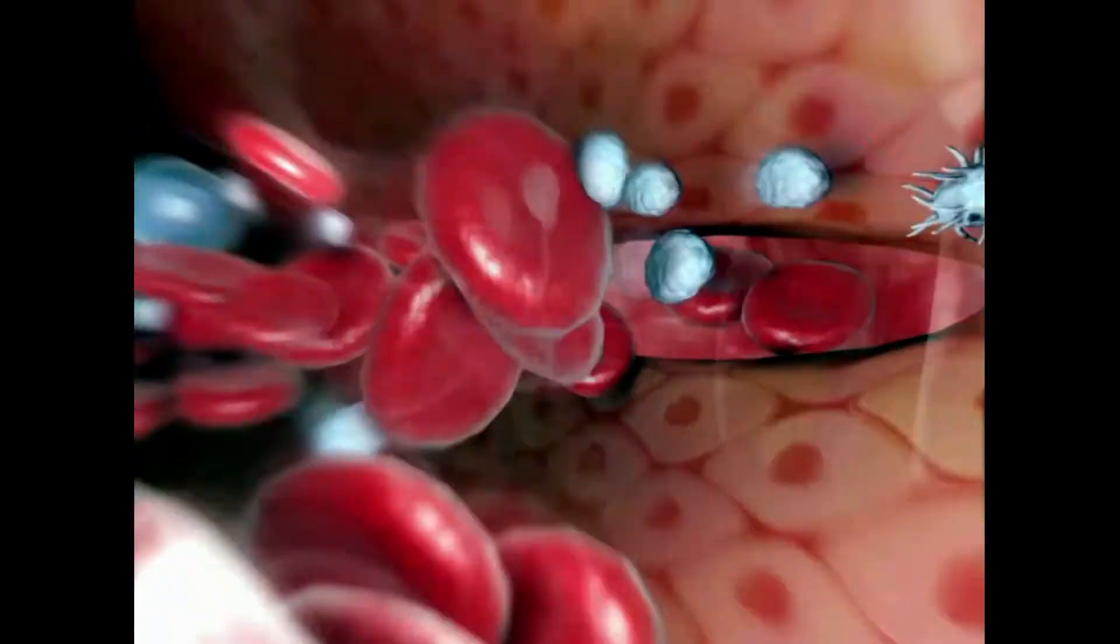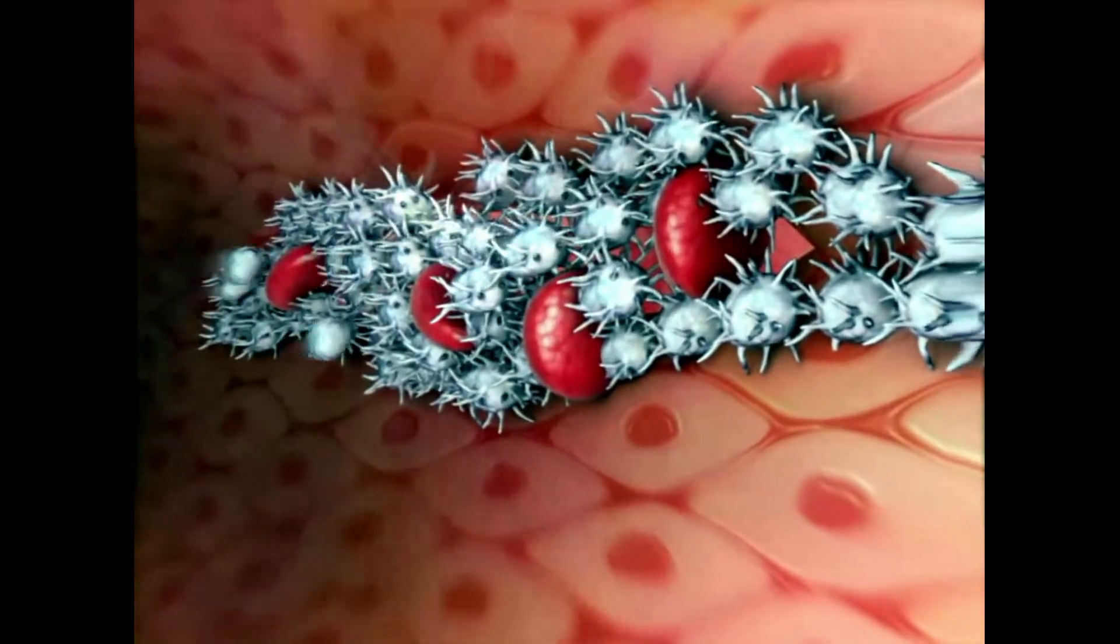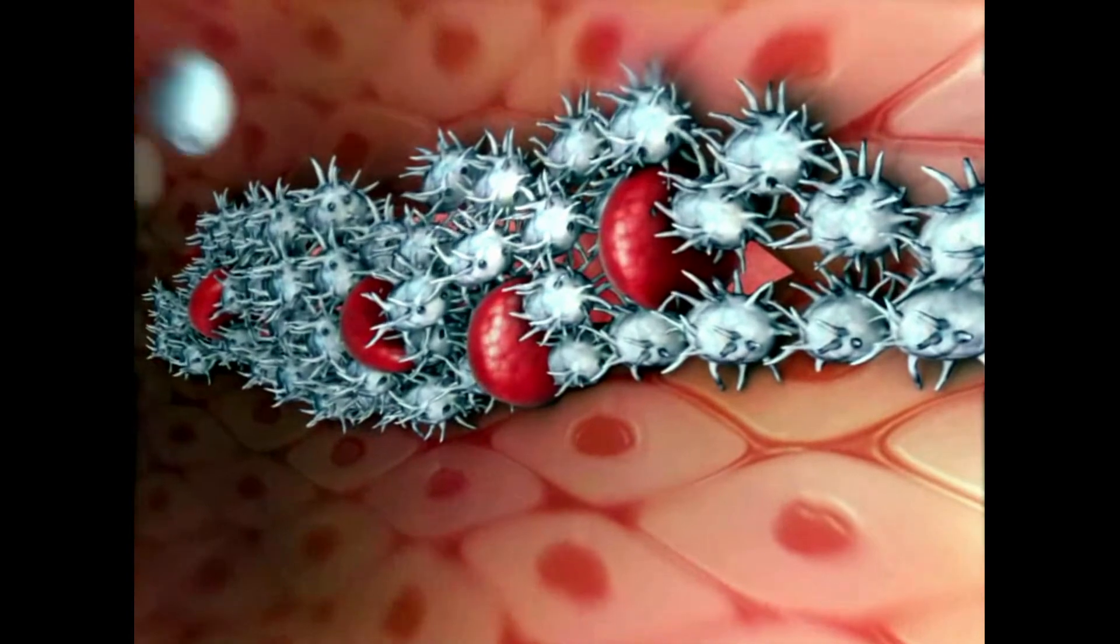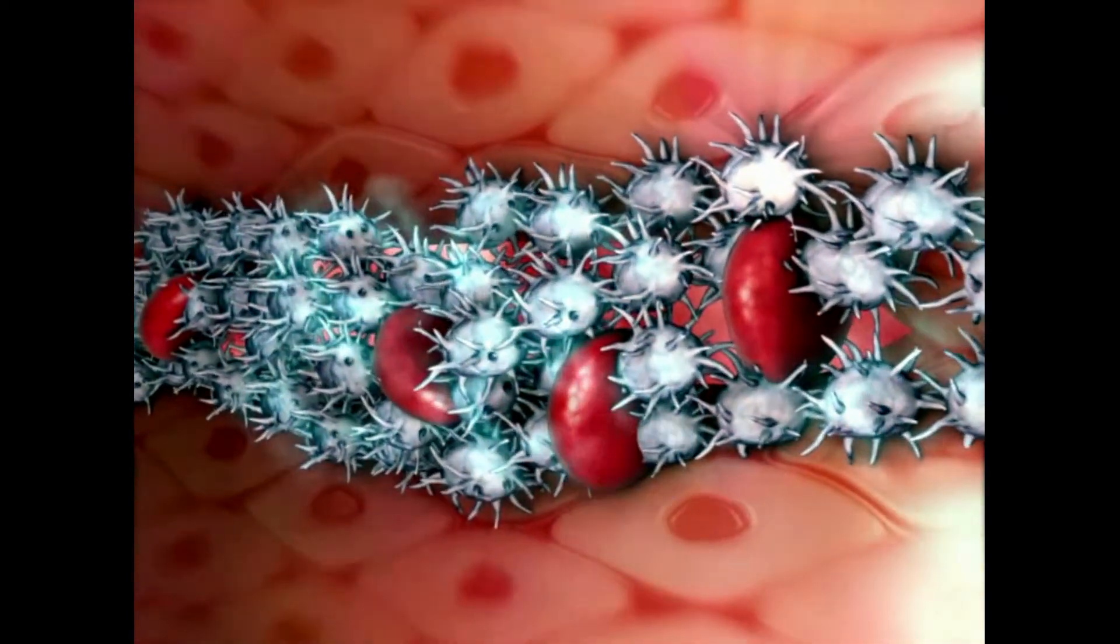The shape of the platelets changes as they liberate the contents of their vesicles. This enables them to connect to one another. Platelets also release chemicals that activate the coagulation system to promote blood clotting.